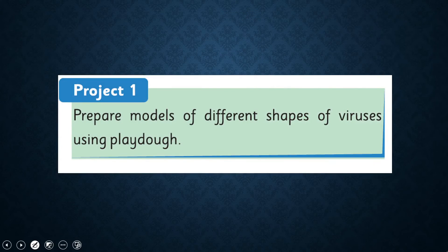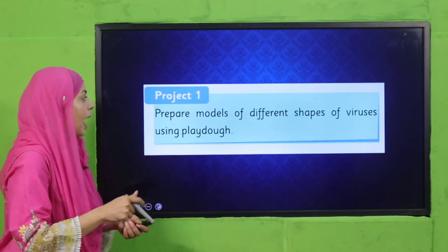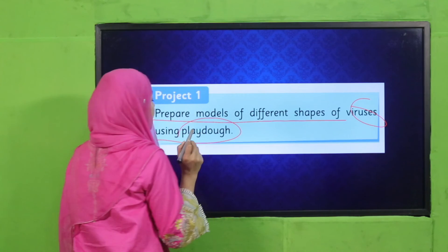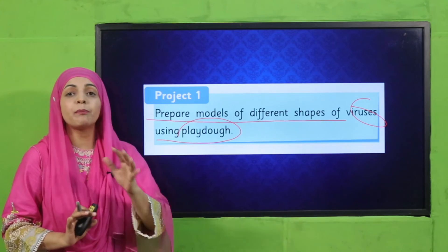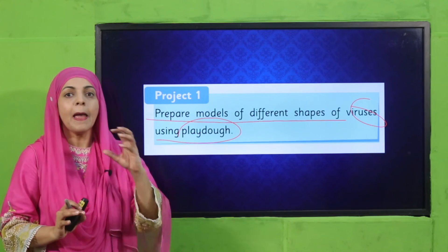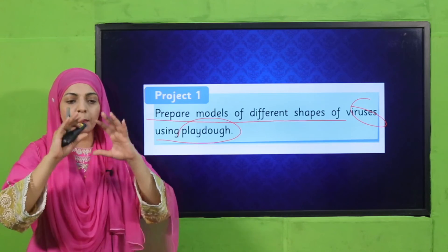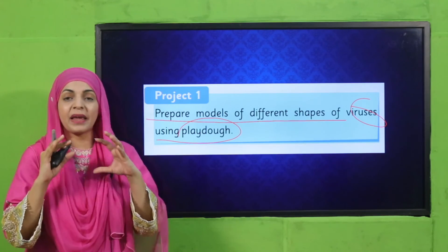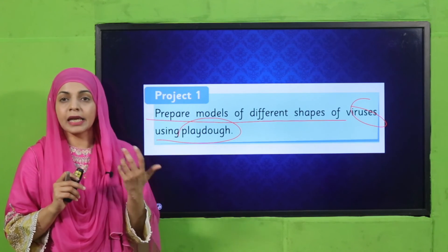You also have to make a fun project. Take Play-Doh — available in every home — and prepare models of different shapes of viruses using Play-Doh. We have discussed many shapes, so make a model at home, put it in a polythene bag or paste it on a thermopole sheet, cover it so it remains intact, and then present it in your class, share it with your friends, and take a picture of it.